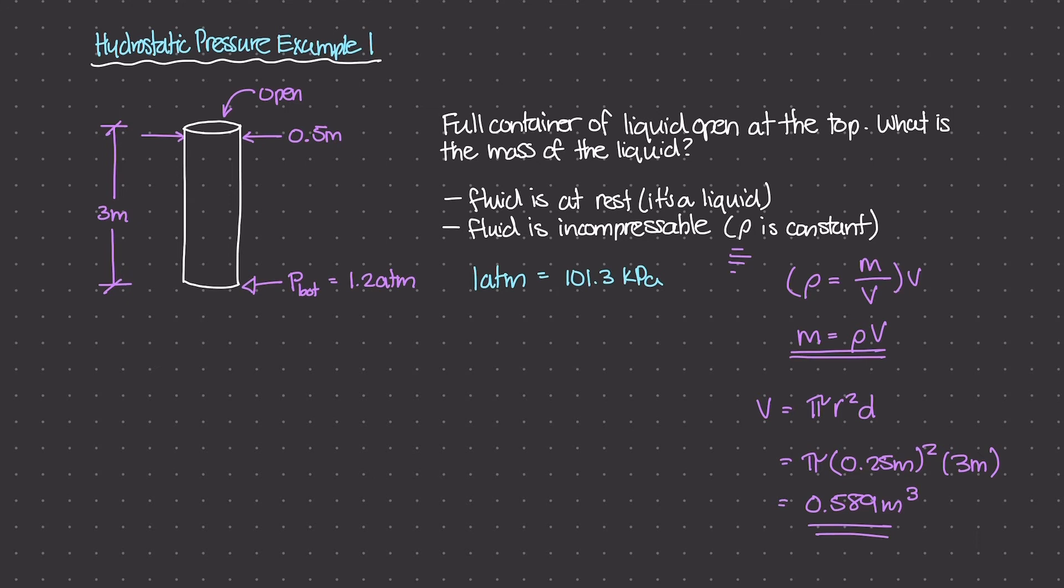But what about the actual mass density? So this ρ value here, right? We only calculated this V, which is this 0.589 meters cubed. But how can we use that to figure out what the mass is? Well, in order to do that, we actually have to use our hydrostatic pressure equation, right? So our hydrostatic pressure equation is really P, which is pressure at any depth of D inside of a container that is filled up with incompressible liquid at rest, is really equal to P₀, which is the pressure being applied at the surface of this body of liquid that we're studying, plus ρgD.